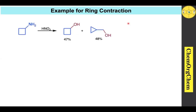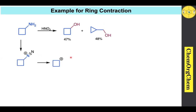In the previous slide we saw the example for ring expansion. Now let's see the example for ring contraction. When cyclobutanamine is treated with nitrous acid, you get two products: one is the rearranged alcohol and another is the unrearranged alcohol. When you treat cyclobutanamine with nitrous acid you get the corresponding diazonium ion, which quickly loses nitrogen gas to give the corresponding carbocation. If it is trapped by water readily, you get the unrearranged alcohol as a product.